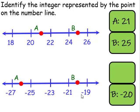So it goes negative 19, negative 20, negative 21, negative 22, negative 23, negative 24, negative 25, negative 26, negative 27.